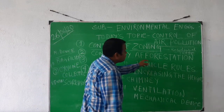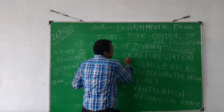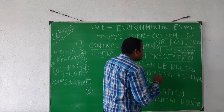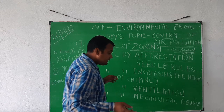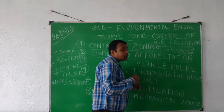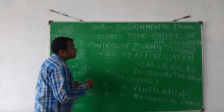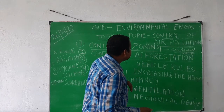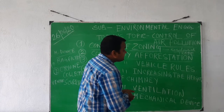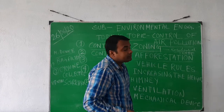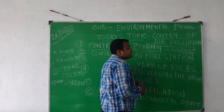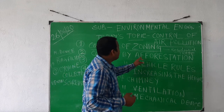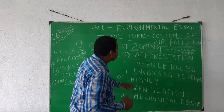The next point is control by afforestation. This is a very important one. Afforestation means planting a lot of trees in our area. By planting trees, we can control air pollution. Not only air pollution, but also water pollution and other types of pollution can be controlled by afforestation.